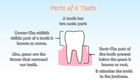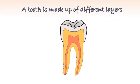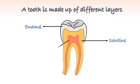Gums are the tissues that surround our teeth. A tooth is made up of different layers: Enamel, Dentine, and Pulp.